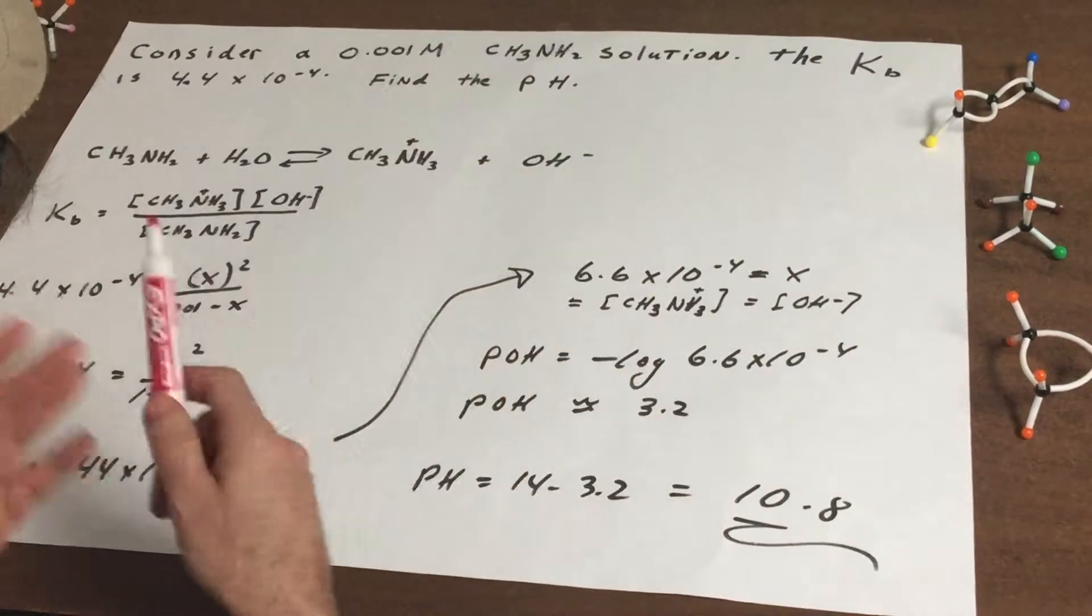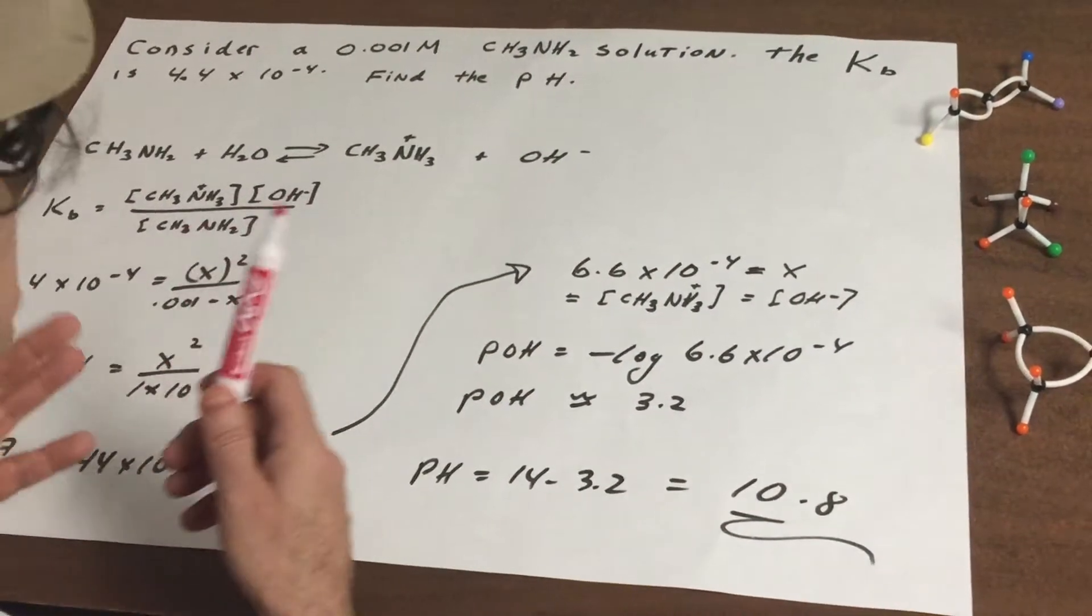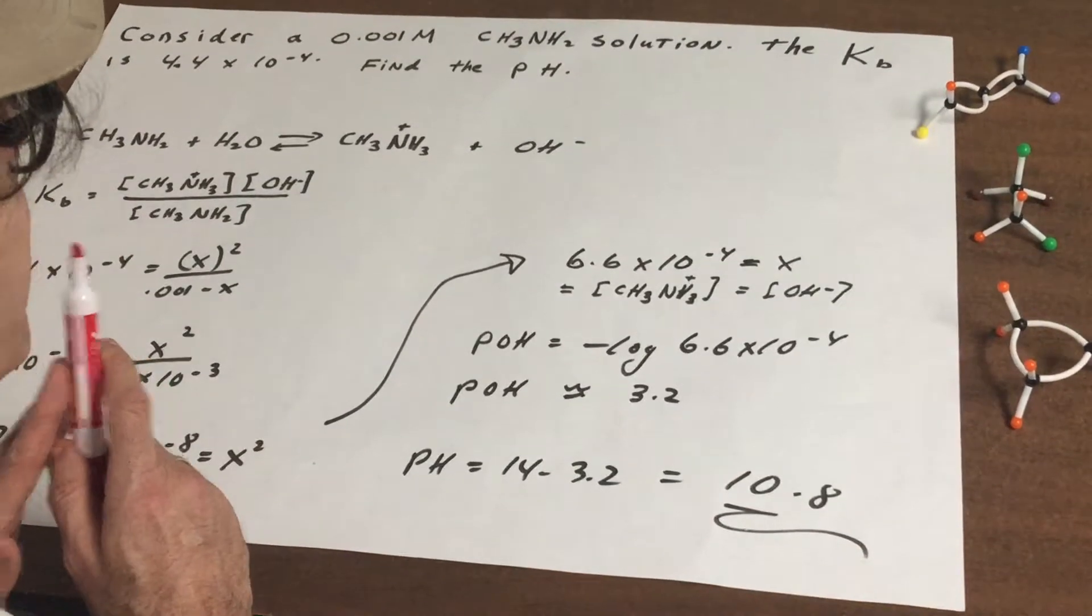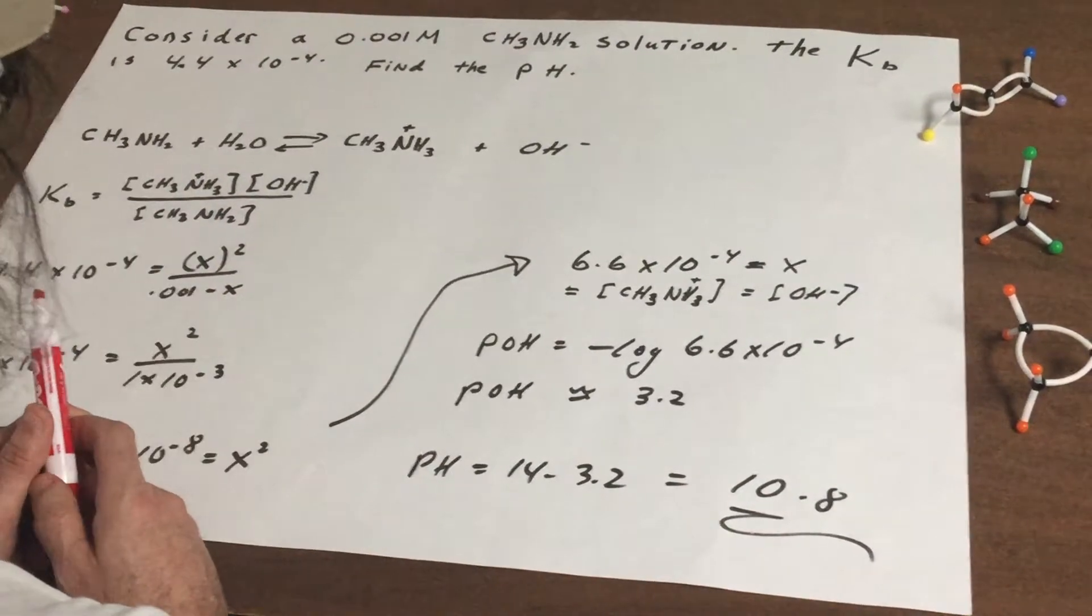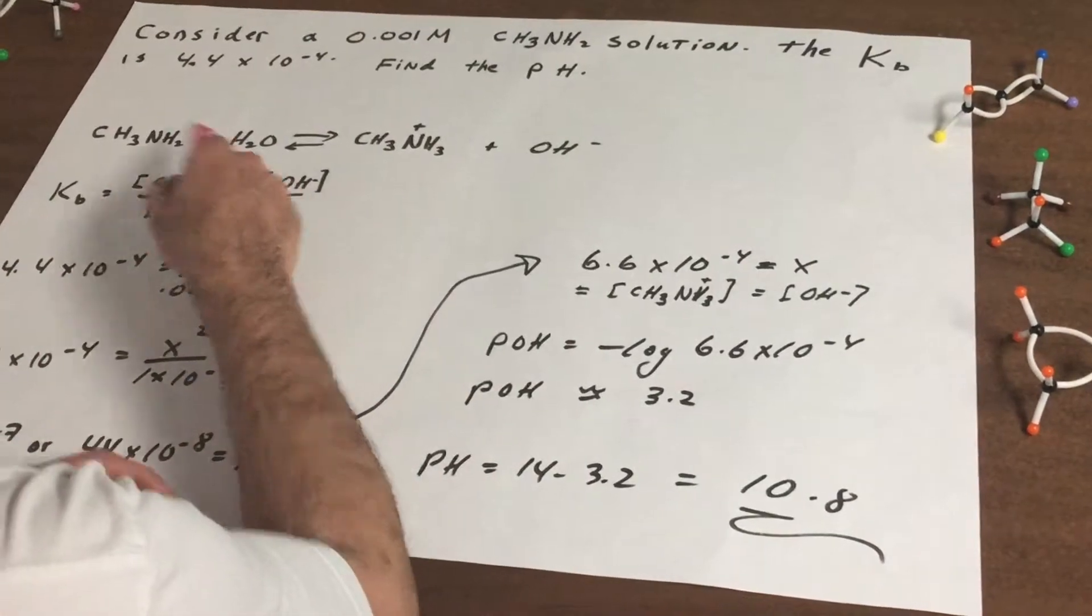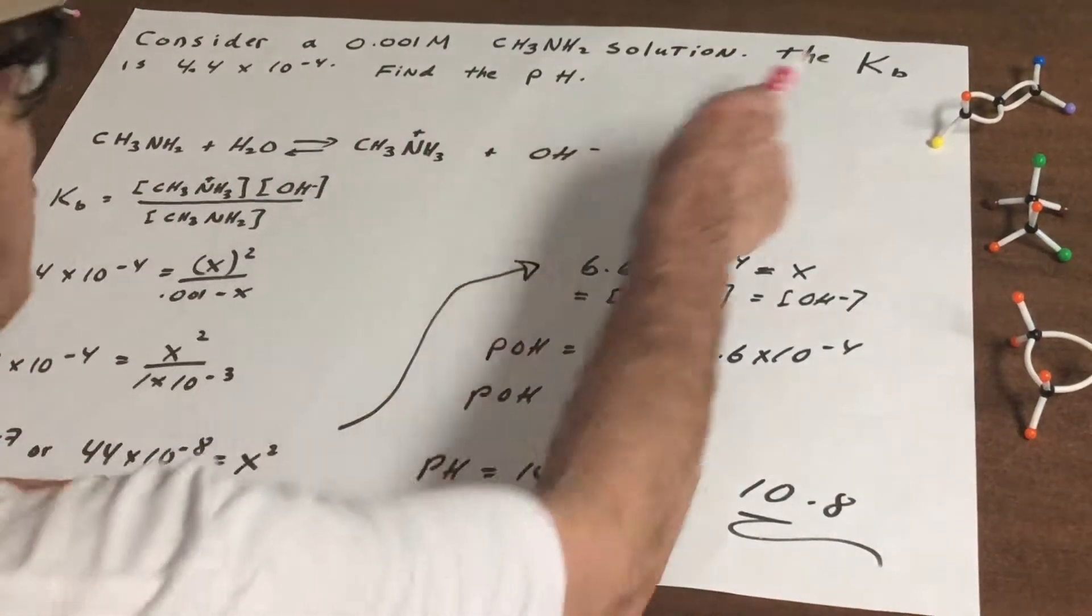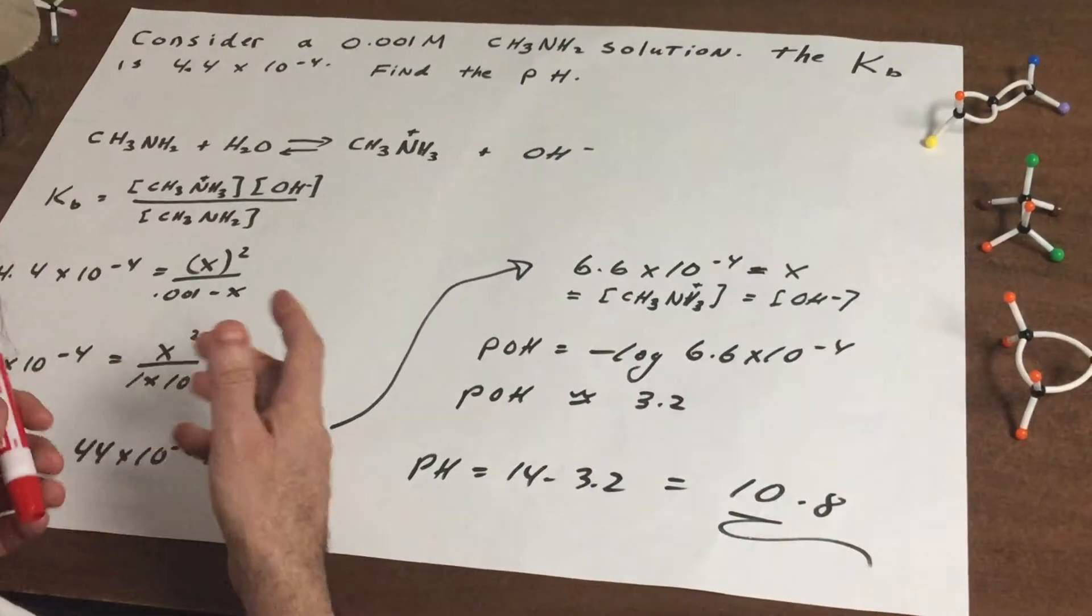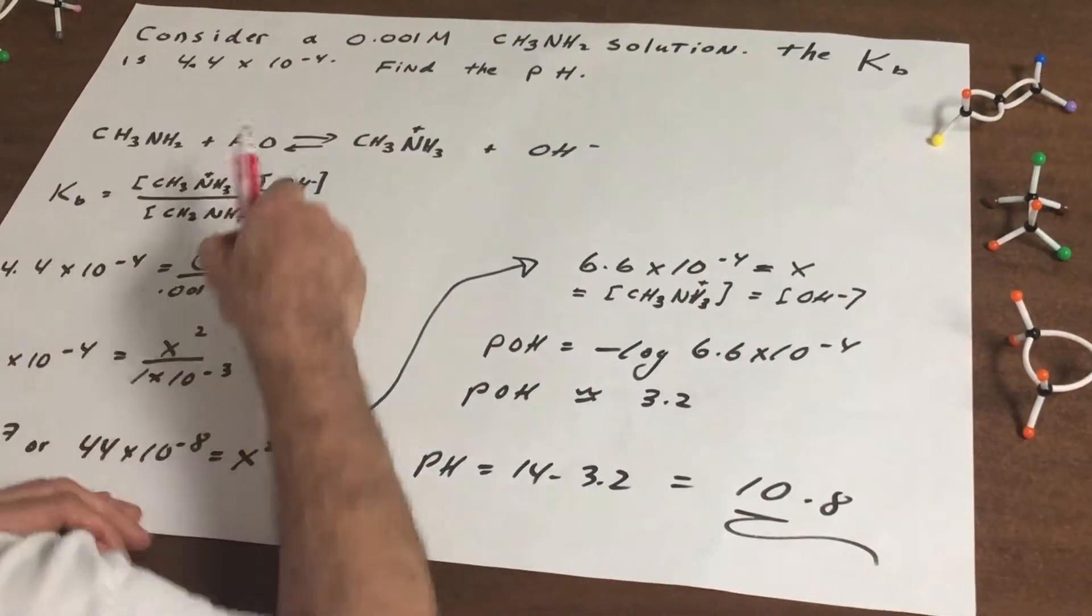The first step is to write the reaction out. So I take the CH3NH2 and we always put it in water. Now because they gave you a Kb we know it's a base, so a base is going to accept a proton.